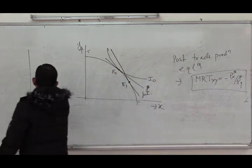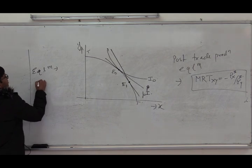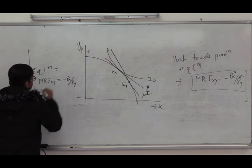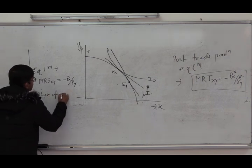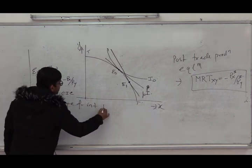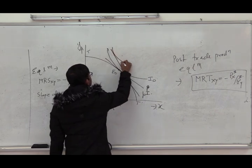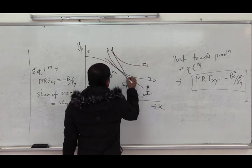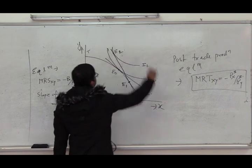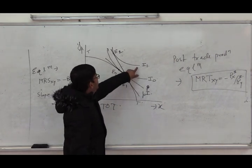The consumption equilibrium will be given by the condition that the marginal rate of substitution between X and Y equals minus PX by PY — meaning the slope of the community indifference curve equals the slope of the international terms of trade line. As per this condition, the new equilibrium will be attained at a higher indifference curve I1. By engaging in trade, the country moves from point E0 to E2, meaning there is a welfare gain — the country moves to a higher community indifference curve.